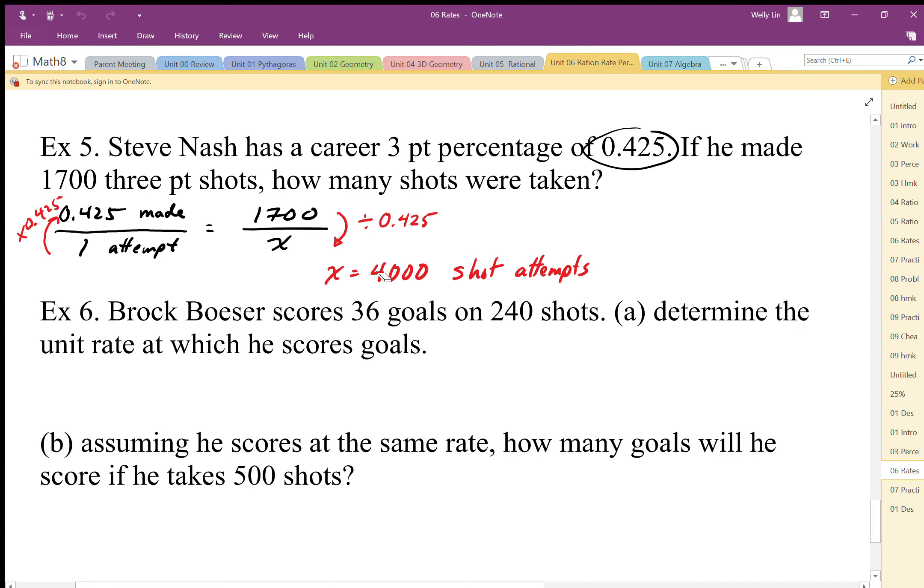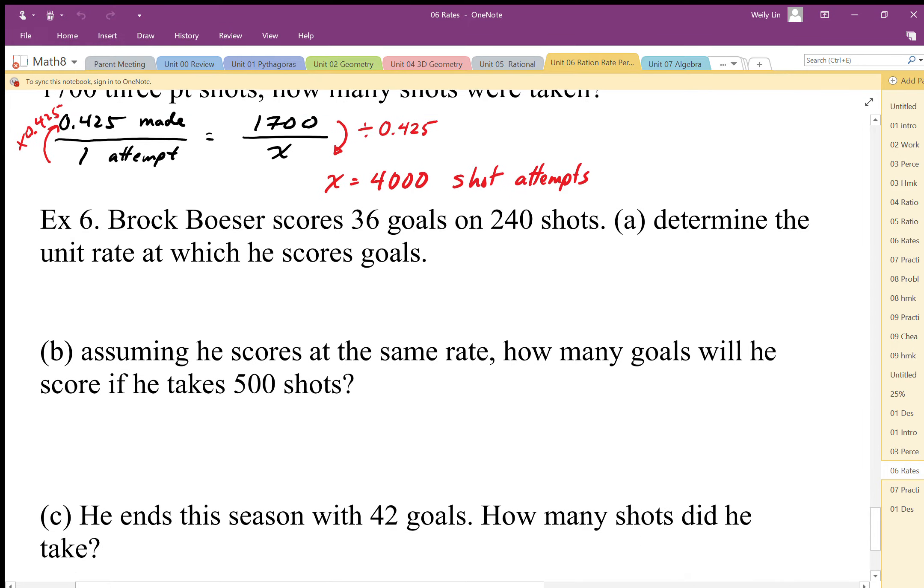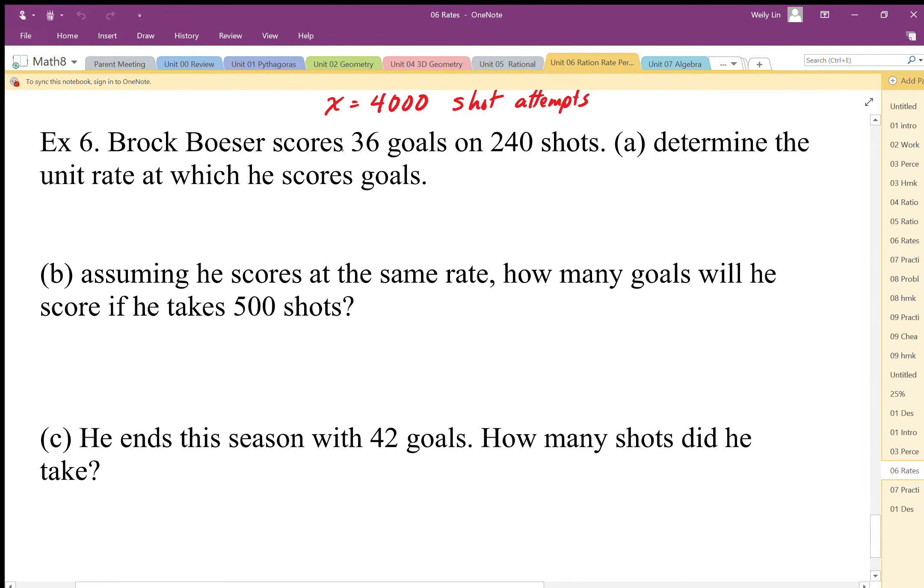Brock Boeser of the Vancouver Canucks scores with a rate of 36 goals on 240 shots. I'm going to write my ratio as goals to shots: 36 goals on 240 shots. The unit rate is when I divide: 36 divided by 240 gives us a unit rate of 0.15 goals. It's important to keep track of the direction of this comparison—it's goals per shot. For one shot, he scores 0.15 goals.